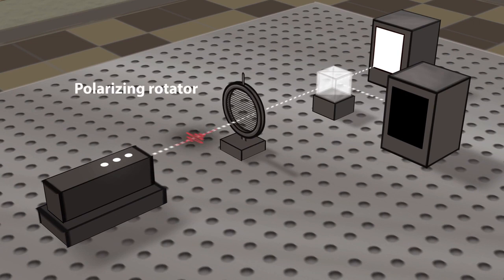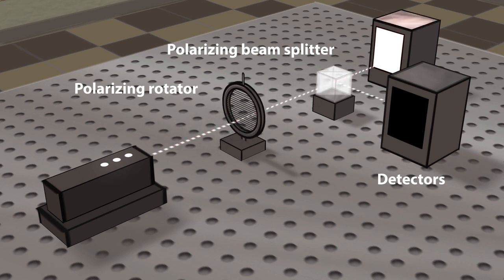Behind the polarization rotator, the photon encounters a polarizing beam splitter. Due to the crystal structure of the polarizing beam splitter, a horizontal and a vertical axis are defined.